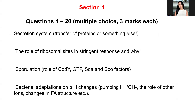Pay attention to specific secretion systems — some transport only proteins, but some transport something else. Know the role of ribosomal sites in stringent response initiation and why that specific site is important. For sporulation, know the role of CosY, GTP, and SDA, as well as sigma factors — which one is phosphorylated, which one is not, which one is active, which one is not.